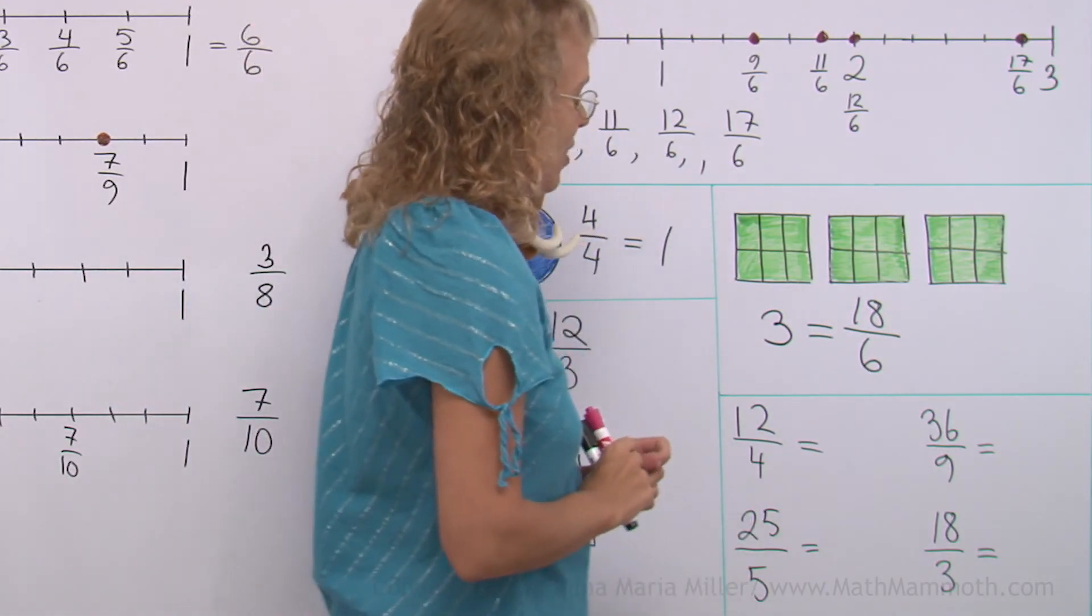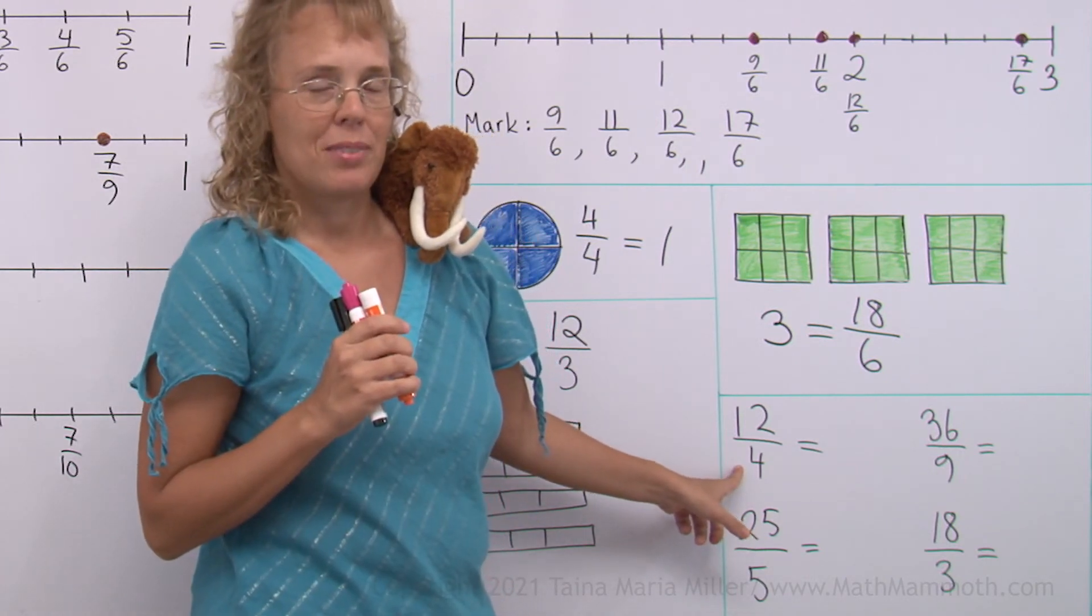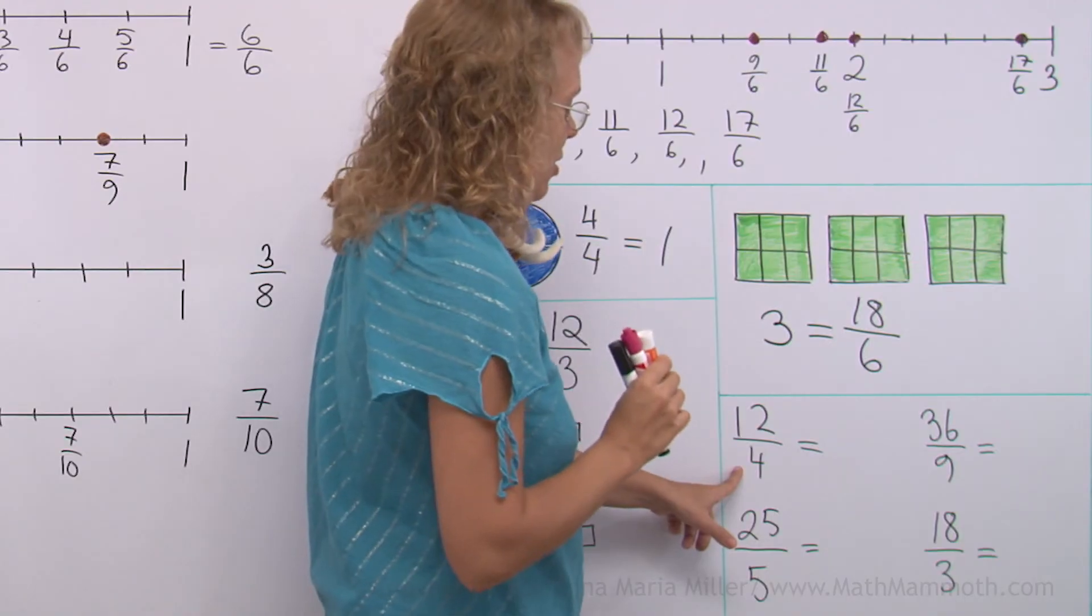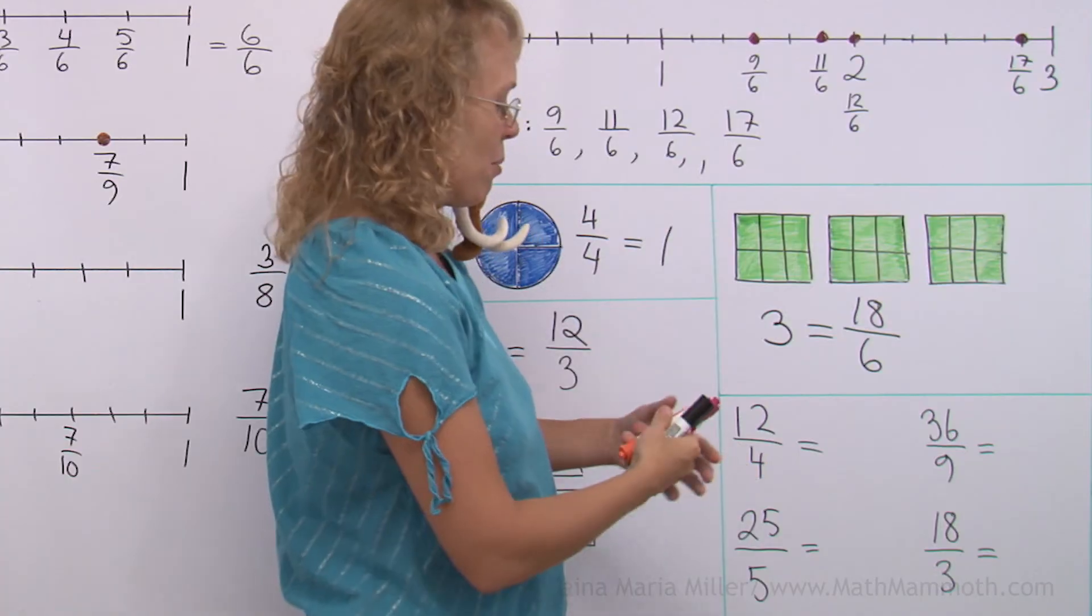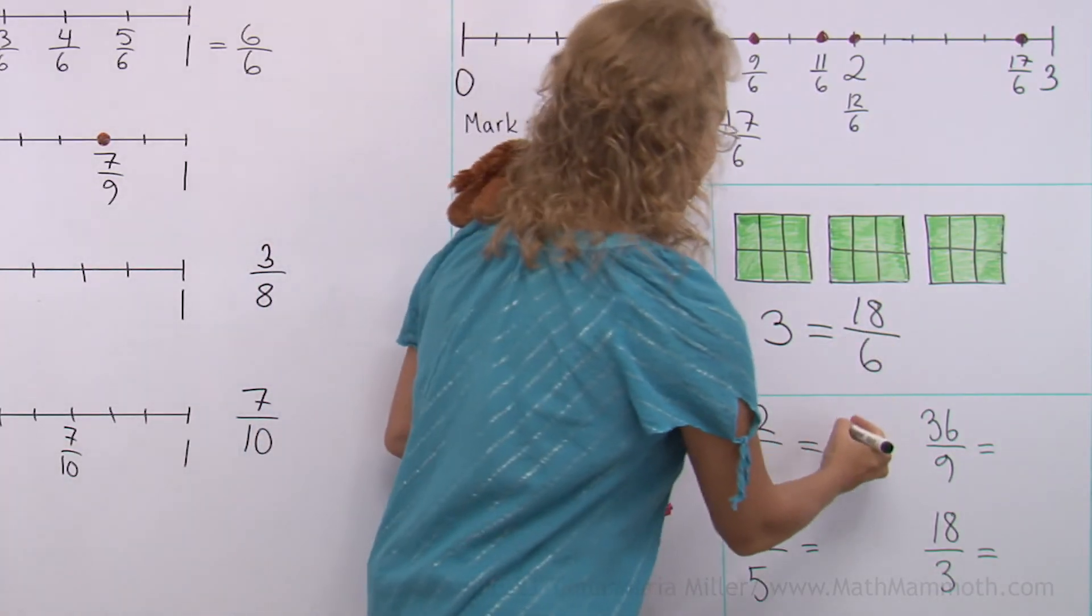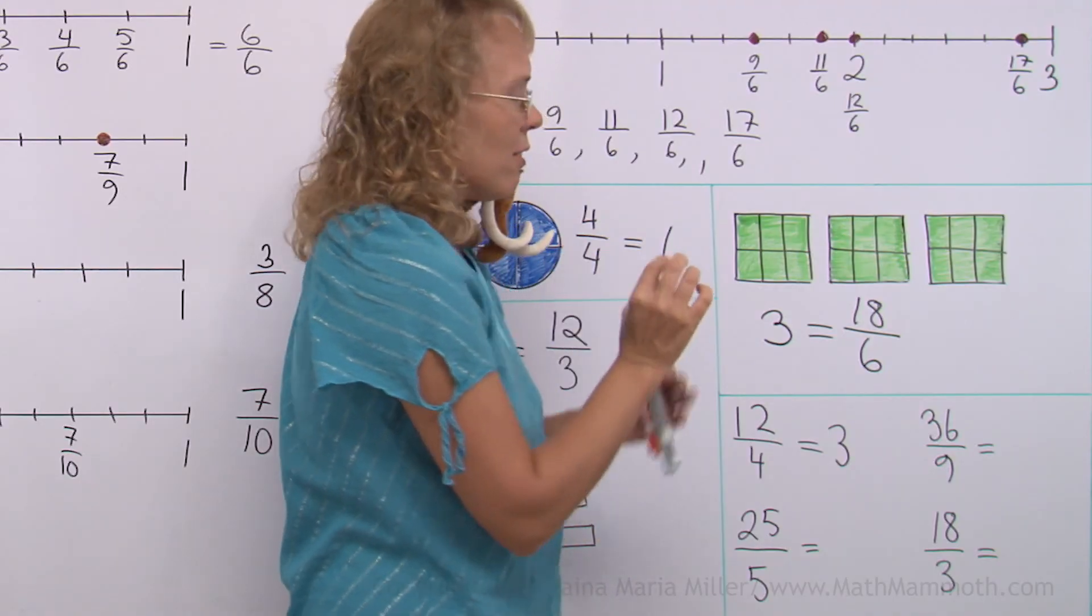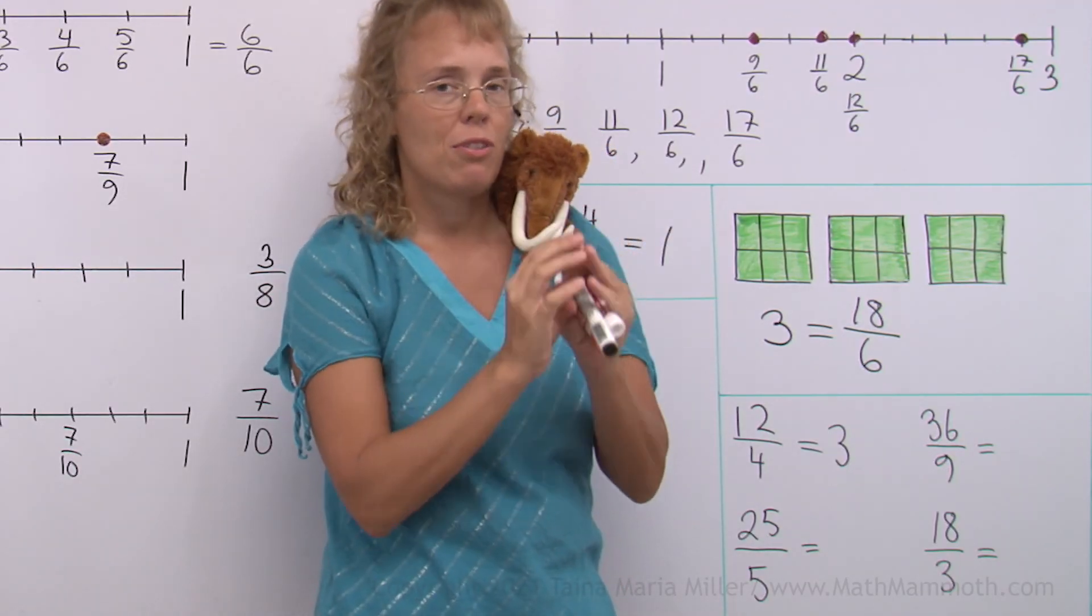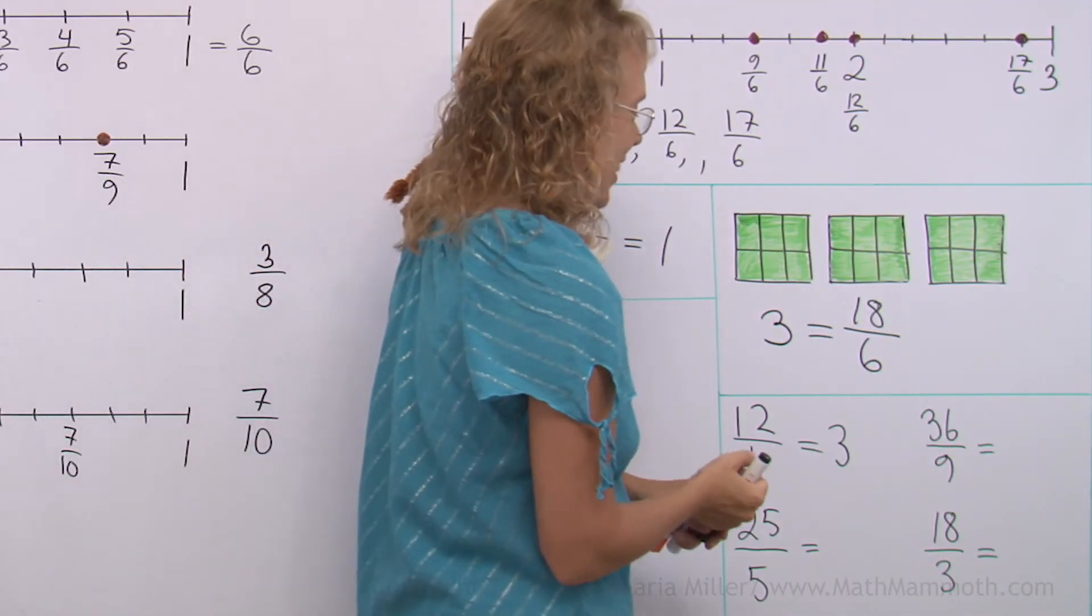Some examples here. 12 fourths is actually a whole number. But which? You'll find out by dividing. Think of this as a division symbol. 12 divided by 4 is 3. Does that make sense? If you think of one whole, it would have 4 fourths. And then you have 4 fourths, 4 fourths, 4 fourths. 12 fourths. Makes sense.